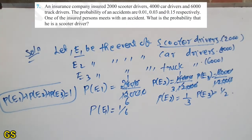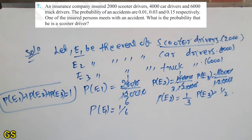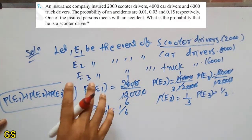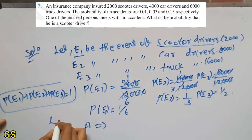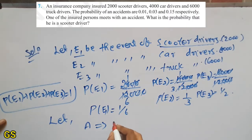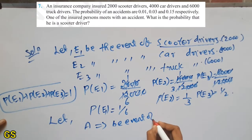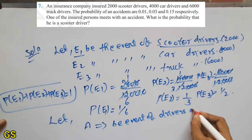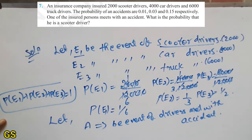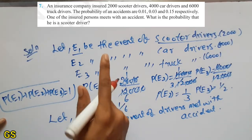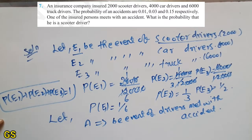Next, the probability of accidents are 0.01, 0.03, and 0.15. One person met with the accident. So here we say A — let A be the event that a driver met with the accident. So P(A given E1): A met with the accident, E1 is the scooter driver. P(A|E1) = 0.01.